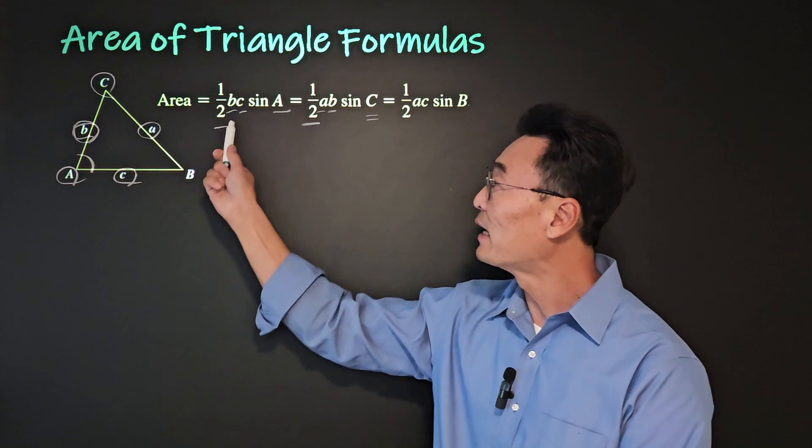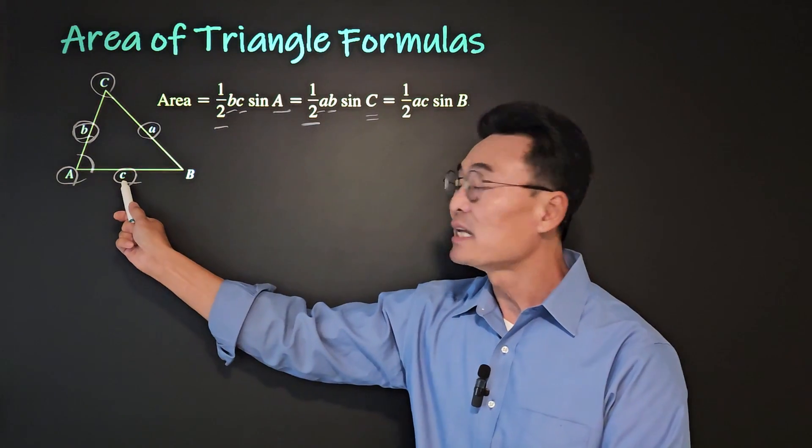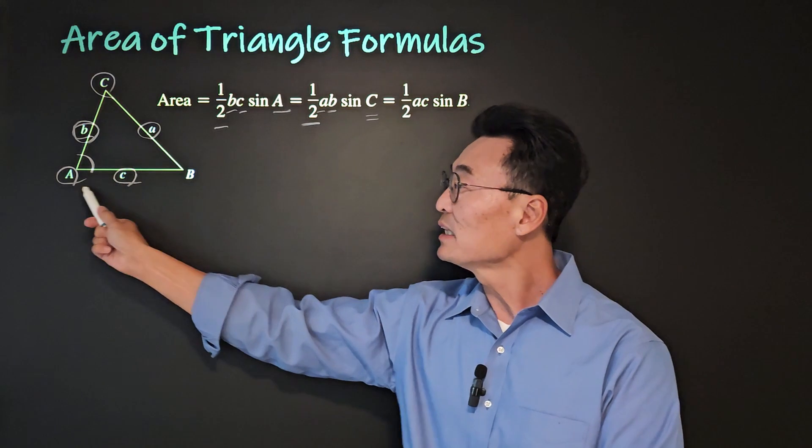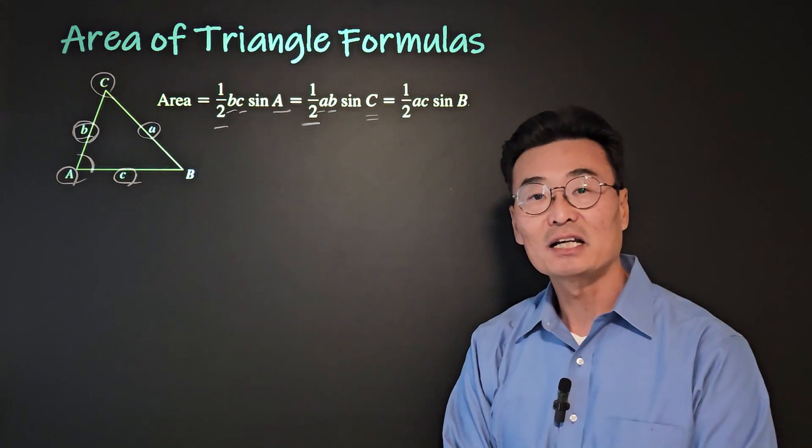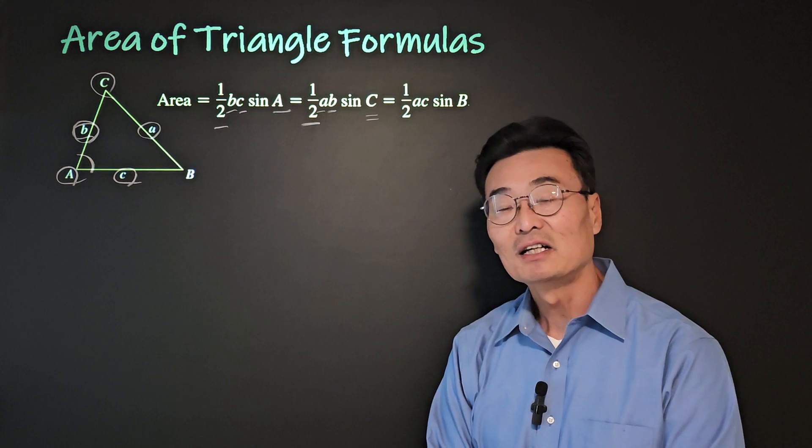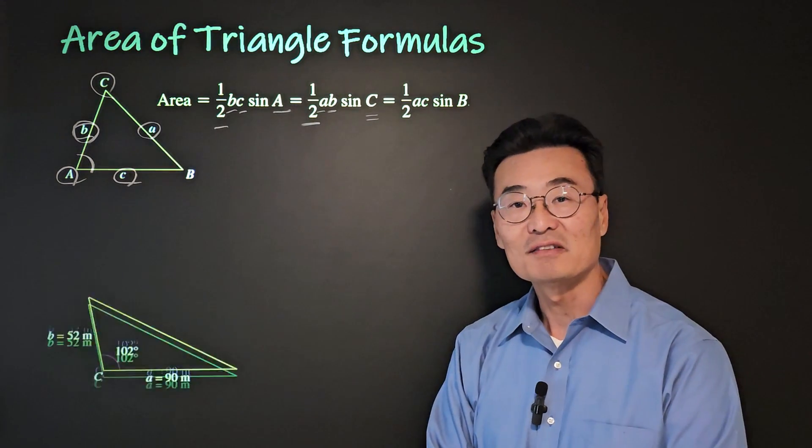So basically, what we're doing is we're taking one half and then multiply that by the two sides and then multiply that by sine of the angle between the two sides. Let's go ahead and use that formula on this example here.